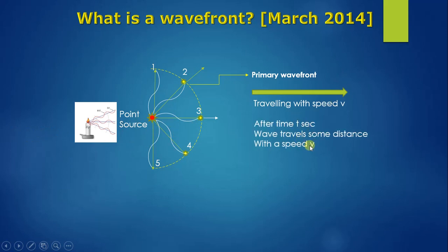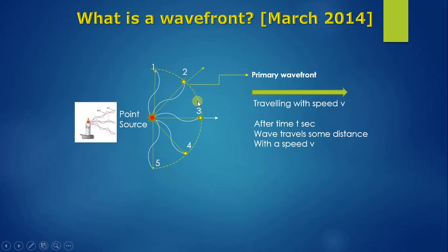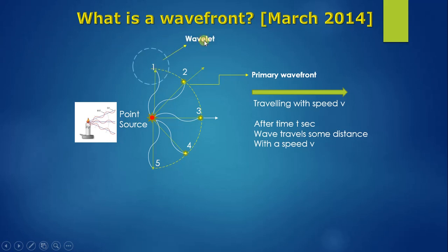Assume this primary wavefront is traveling with speed v. In a certain interval of time t seconds, they will cover a distance vt — distance equals speed multiplied by time. By taking distance vt as a radius and treating each point on this primary wavefront as an independent light source, you draw a sphere around each point. These spheres are called wavelets, and the radius of each sphere equals v times t.